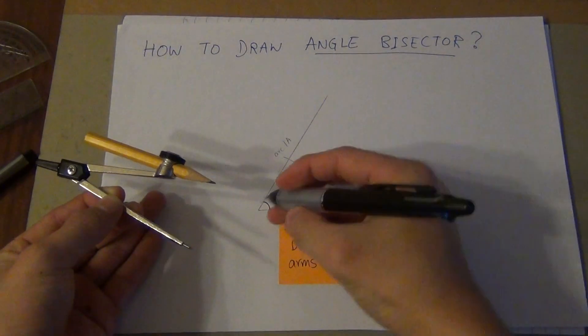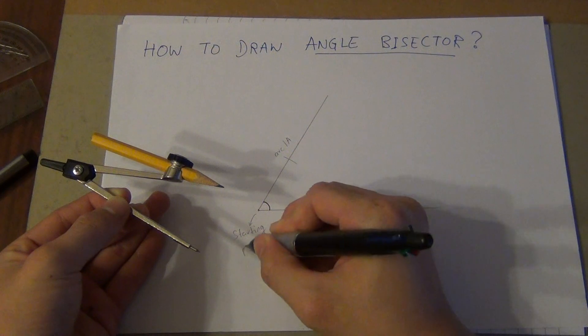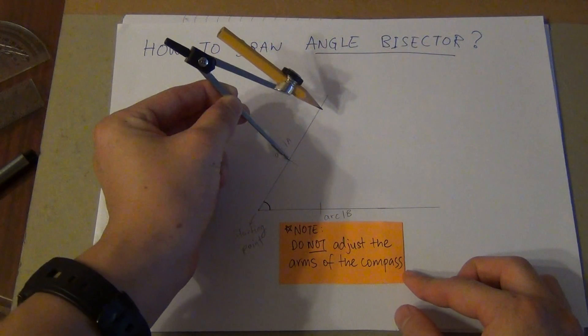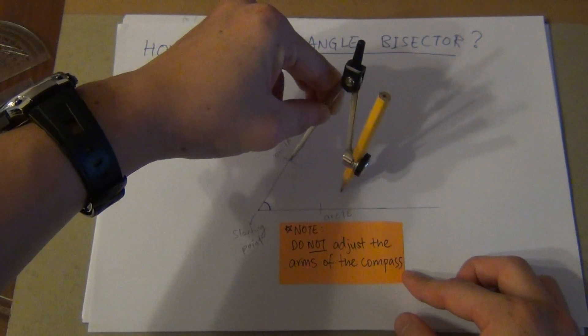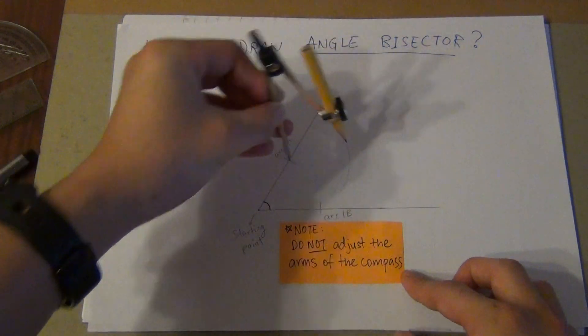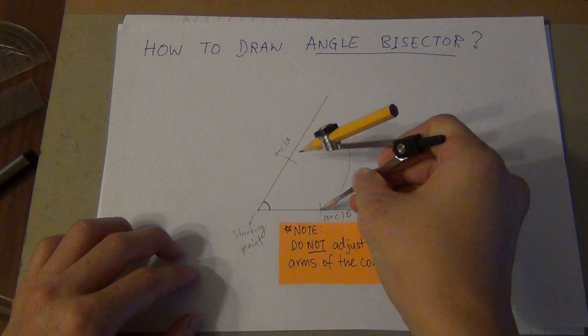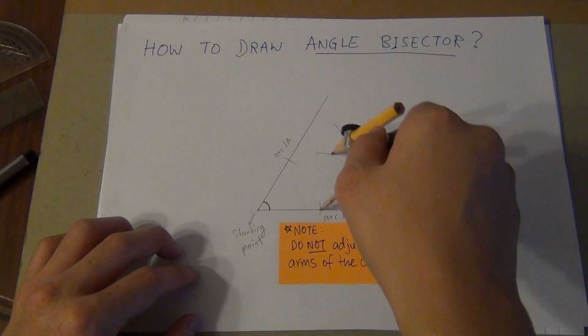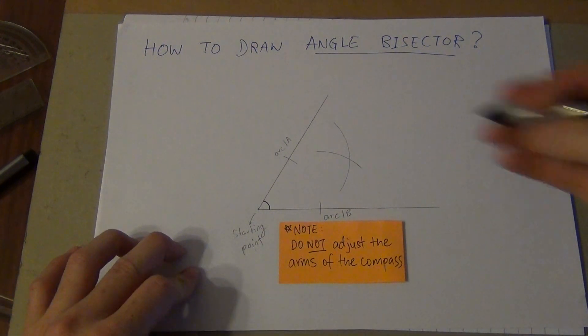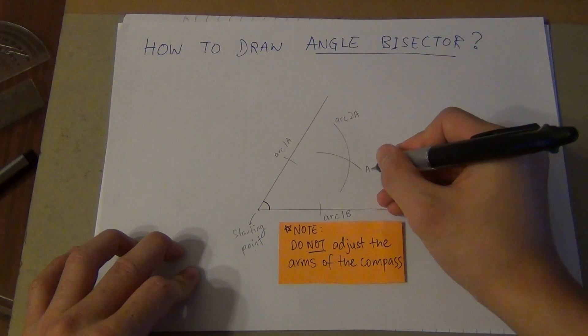I'll label this as arc 1a and this will be arc 1b. So now this is the starting point. What I'm going to do now is put my pointer end onto arc 1a and do a simple arc in between the two lines. Using the same pointer end, I put it at the intersection of arc 1b and do a simple arc in the middle. I'll call this arc 2a and I call this arc 2b.